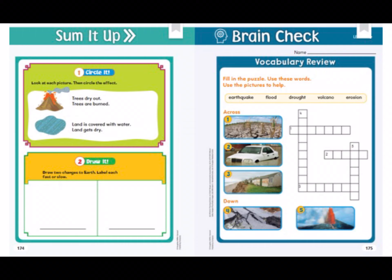Look at where it says 'sum it up' on our next page. Look at each picture and then circle the effect. Look at our volcano — do trees dry out, or are trees burned? Which happens when a volcano erupts? Burned — good job. When it rains: land is covered with water, or land gets dry — which happens? Land is covered with water. Great job.